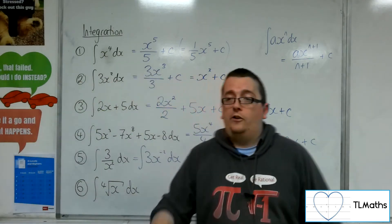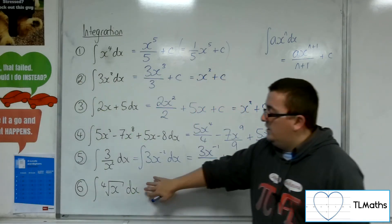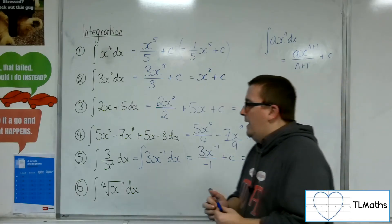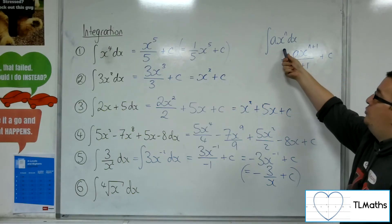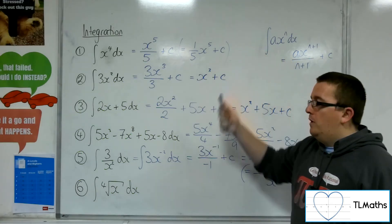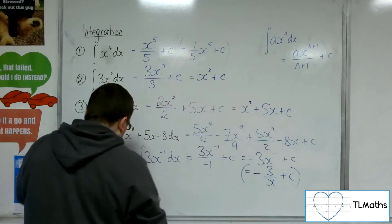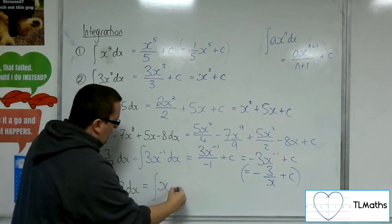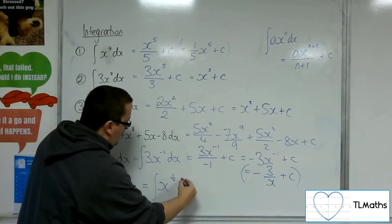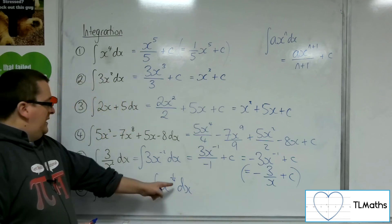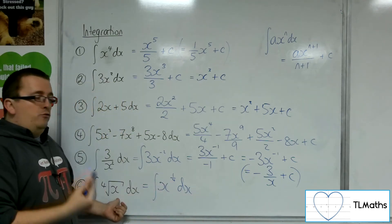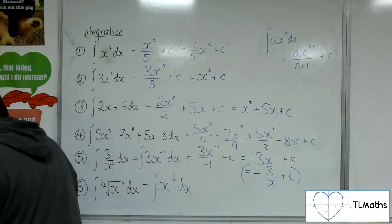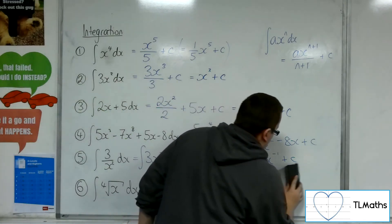Last one is the integral of the fourth root of x. Once again, as it was for question 5, it's not in the correct format in order to integrate it. So, we want to rewrite this as x to the power of a quarter. Remember your indices. x to the power of a quarter is the fourth root of x. So, now I can integrate.